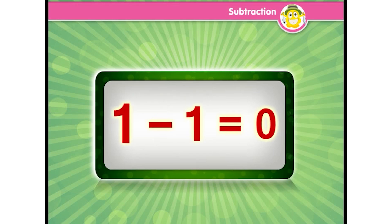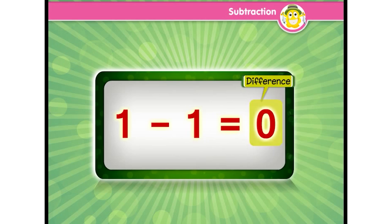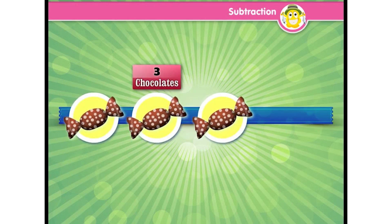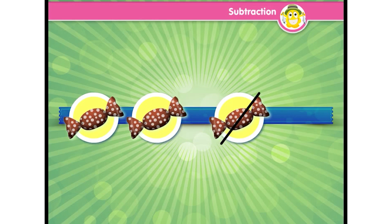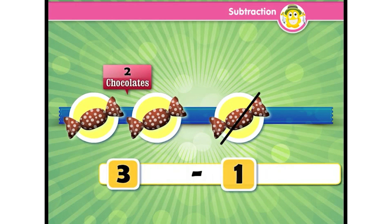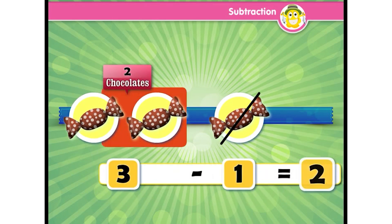The answer we get after subtraction is called the difference. For example, if I have three chocolates and I give one to my friend, then I will have two chocolates now. So it shows three minus one is equal to two, where two is the difference.